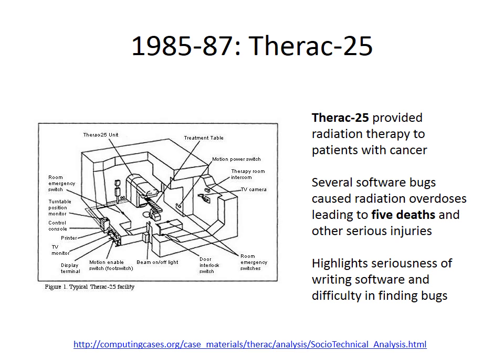Did you know that a typical new model vehicle has over 100 million lines of code in it? Considering how often you get app updates on your phone that fix bugs in programs with far fewer lines of code, what are the chances that your new car probably has at least one bug buried in those 100 million lines of code?